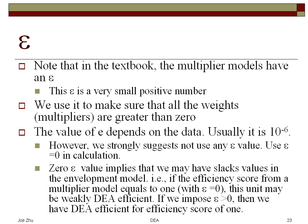The multipliers cannot take zero values. Usually in the calculation, this epsilon is a very, very small number. So you just want to make sure that the weights that you get are positive.